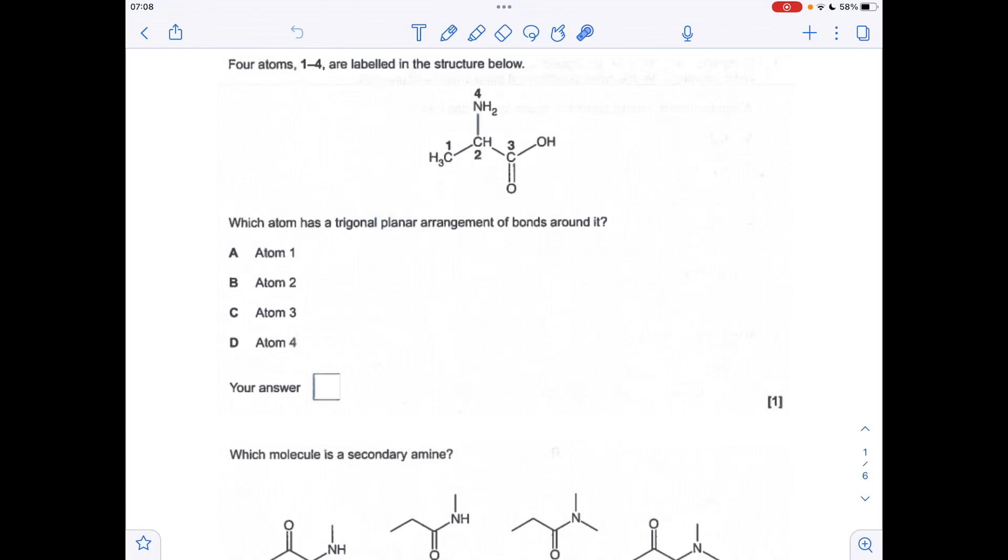First question tests knowledge of shapes of molecules. And obviously the shape's dictated by the number of electron regions around each atom. So we'll just quickly go through this one. So carbon 1 has got four bonding regions around it. Because you've got the three bonds to the hydrogens and then this carbon-carbon bond. There's no lone pairs, so that's going to be tetrahedral.